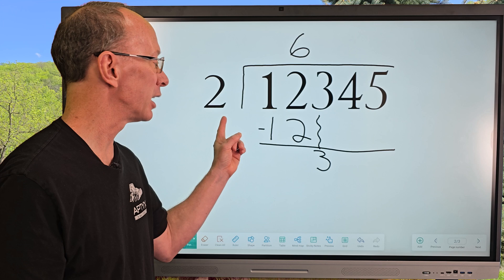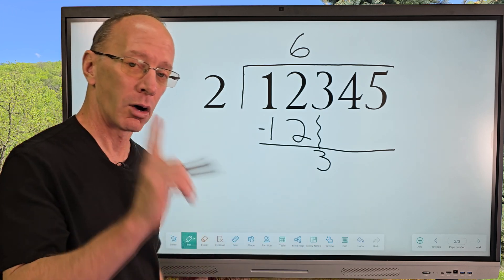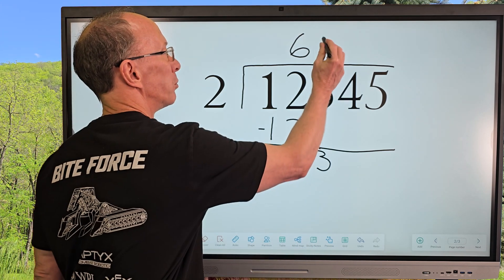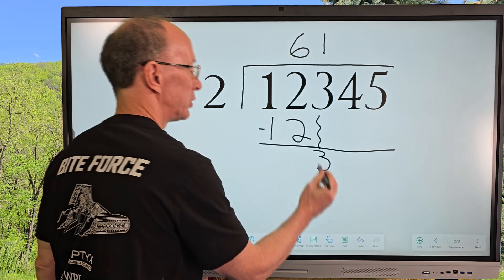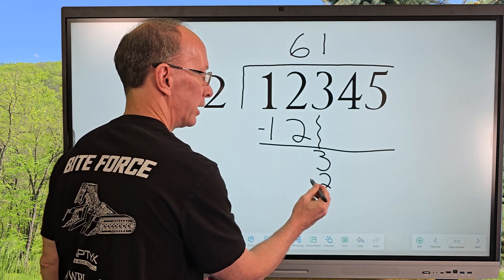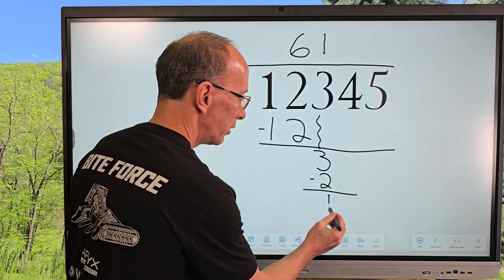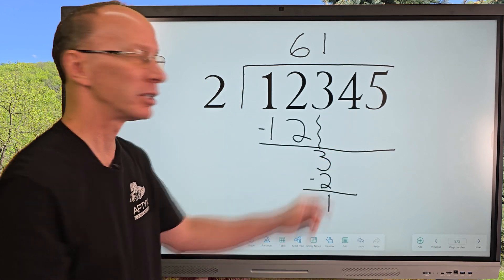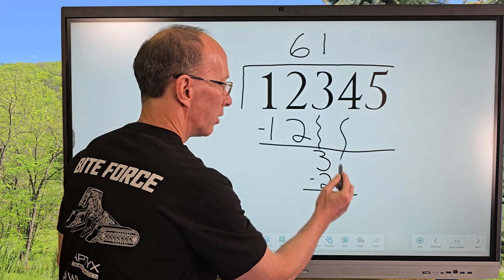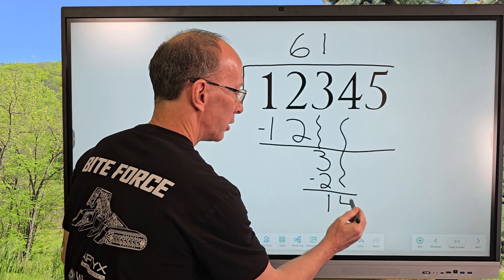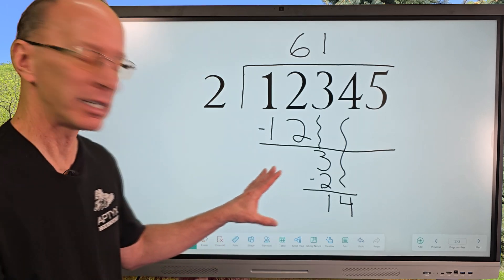And then I start the whole process over. So how many times can I put 2 into 3? Only 1 time. So I'm going to go ahead and put the 1 right here. 1 times 2 is 2. Go ahead and subtract, and then 3 minus 2 equals 1, so I put the 1 right here. And then I bring that next number down which is a 4, bring it all the way down here and put the 4 there.